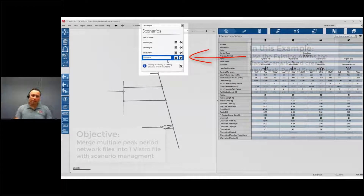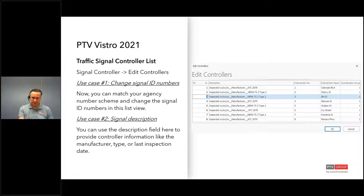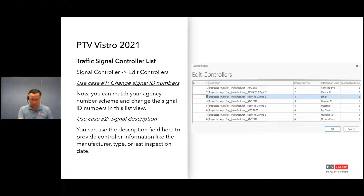Now we also have a traffic signal controller list. It doesn't sound like a big feature, but I really think it is. With this traffic signal controller list, it gives you an opportunity to view the list where you can see the intersection number and the traffic controllers associated with that intersection right next to each other. Within this list, you can update the traffic controller ID number — something you couldn't do in previous versions.